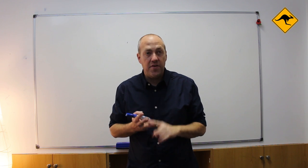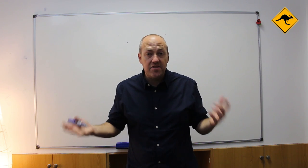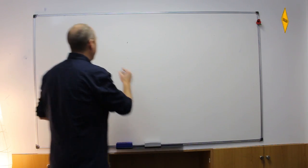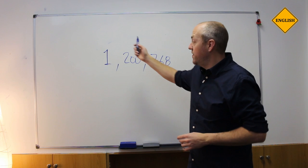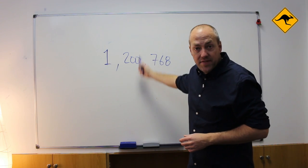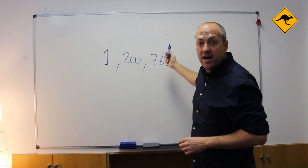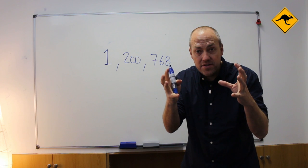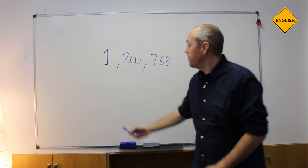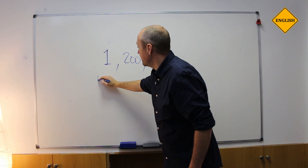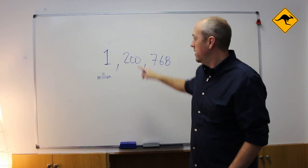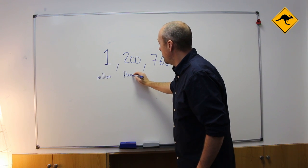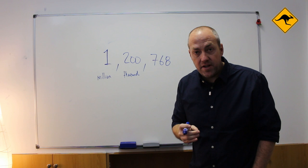So here we have a big number. We have millions, hundreds of thousands, and hundreds. So in English what we do is we tell you the unit after the number. For example: one million, two hundred thousand, seven hundred and sixty-eight.